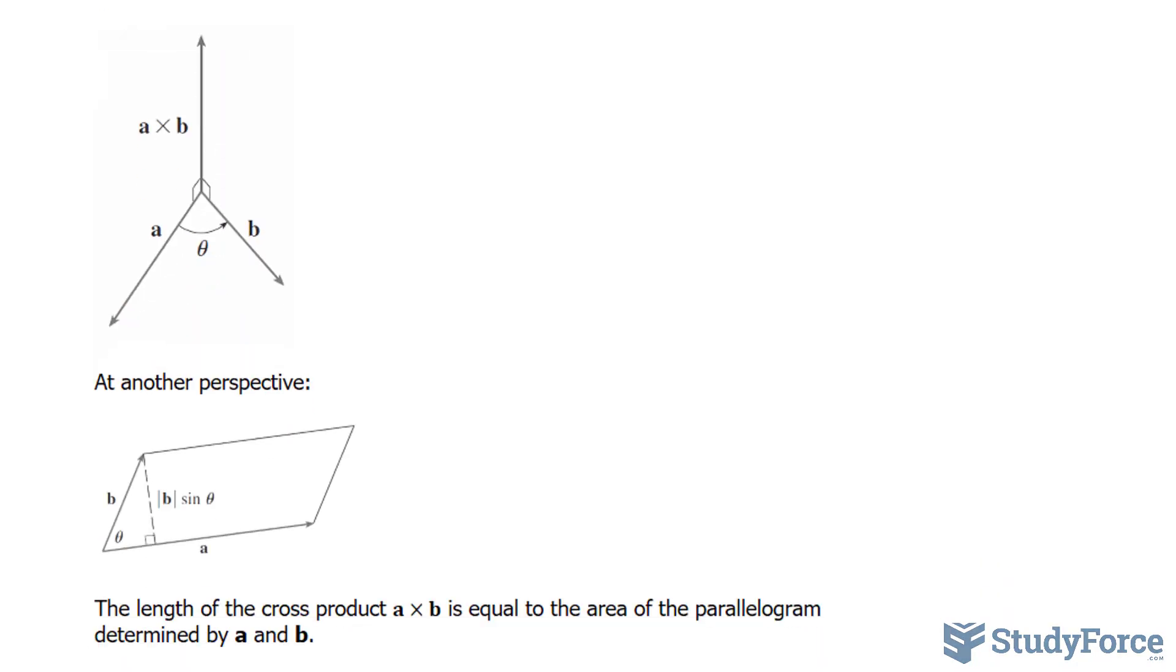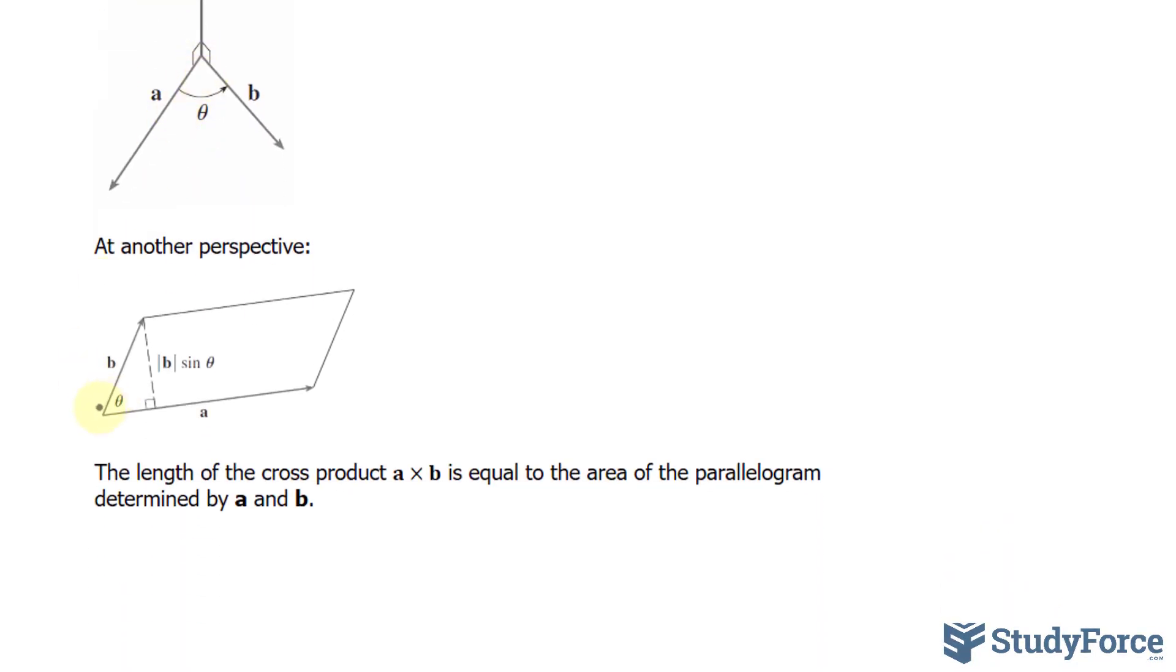But if we look at this further and say that this vector represents the base here, B represents the slant height, we can easily find the area of this parallelogram by taking the base length, which is technically the magnitude of vector A, times this length, which can be found using the trigonometric function sine. And that's represented as the magnitude of vector B times sine theta.